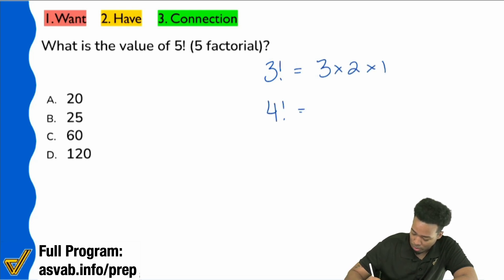If we say four factorial, that's four times three times two times one. And if we say five factorial, that'll end up being five times four times three times two times one.